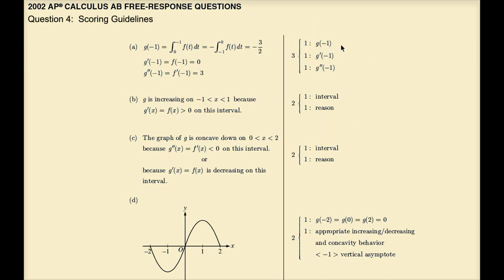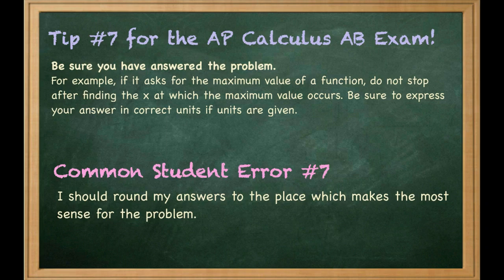The scoring guidelines awarded 3 points for part a (one each for g of negative 1, g prime of negative 1, and g double prime of negative 1), 2 points for part b (interval and reason), 2 points for part c (interval and reason), and 2 points for part d (correct zero values and appropriate increasing/decreasing and concavity behavior).